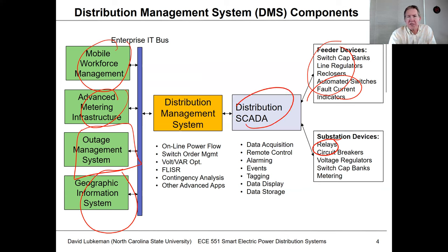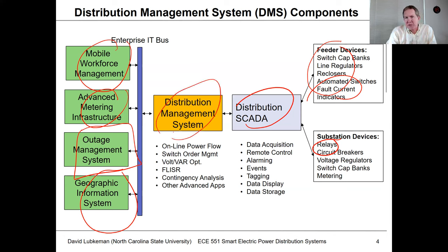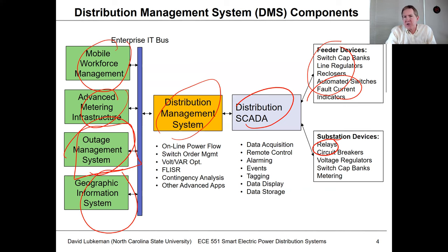Most utilities would at least have SCADA. How much of the distribution management system functionality varies, but most all utilities have some software for doing the outage management process.